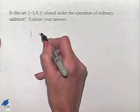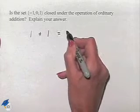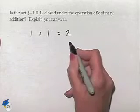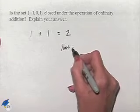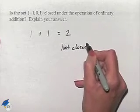But notice that if I take the number 1 and add it to itself, we end up with the answer 2. Since 2 is not in the original set, we would have to say that this particular set is not closed under this operation.